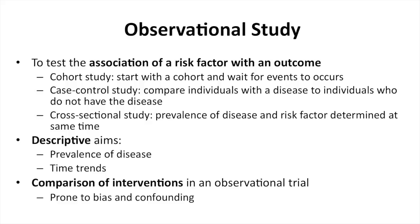In the observational study, there are different questions you can try to answer. The most common: is there any association of a risk factor with an outcome? You can do a cohort study — start with a cohort and wait for outcomes to occur. If it's a rare event, you usually need a case-control study, where you start with patients who already have the event and compare them with those who don't. Or you do a cross-sectional study, which determines the prevalence of disease and risk factors at the same time. Observational studies can also have descriptive aims, such as prevalence or time trends, and you can try to compare interventions, but you have to ensure against bias and confounding.